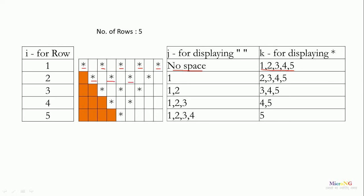In the second row, we are displaying 4 stars, so we require 4 countings. We do the counting from 2, 3, 4, 5 — that makes a total of 4 countings. And we require 1 space, so we do the counting as 1. In the third row, we require 2 spaces, so we are counting from 1 to 2. On the fourth row, we require 3 spaces, and on the fifth, we require 4 spaces. So for 4 spaces, we are counting the value of j from 1, 2, 3, and 4.